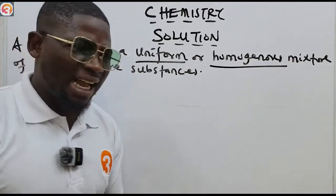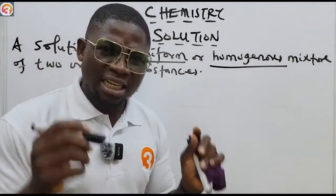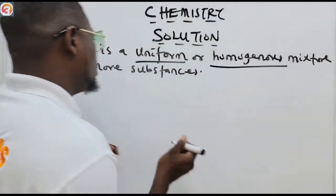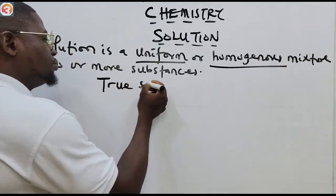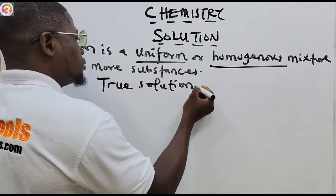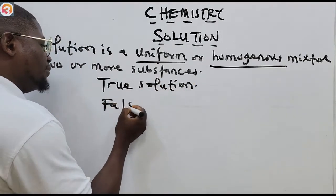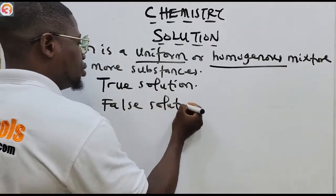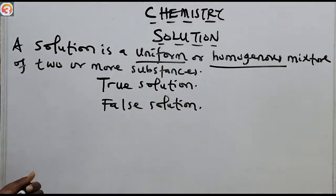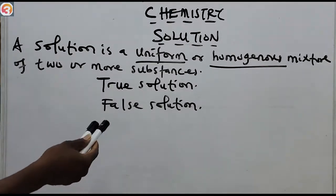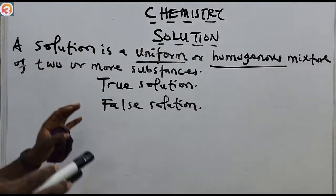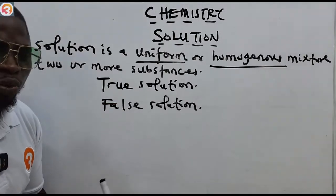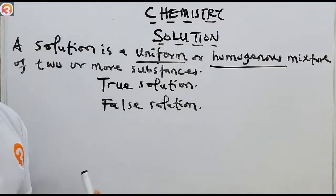So a solution is a uniform homogeneous mixture of two or more substances. It is important to know that solutions are of two types: we have what is called a true solution, and we also have what is called a false solution.